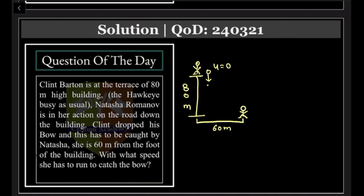In order to fall down, this will take some time. S is equal to ut plus half a t square, so t equals 4 seconds.